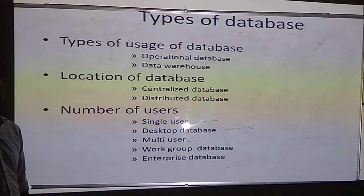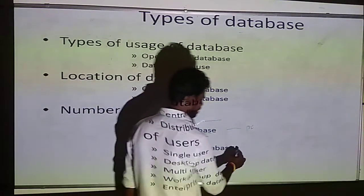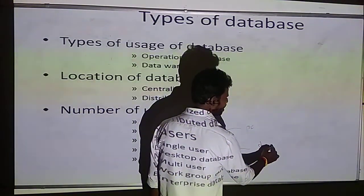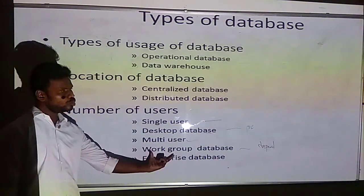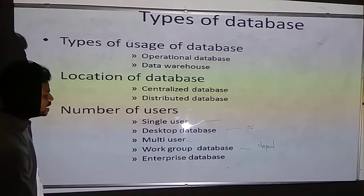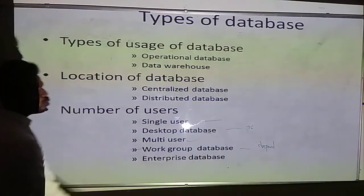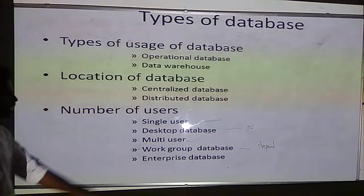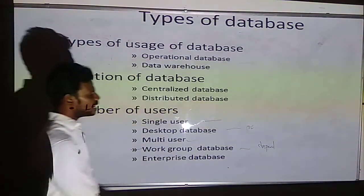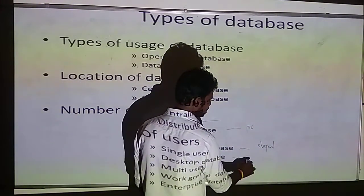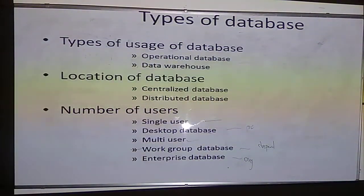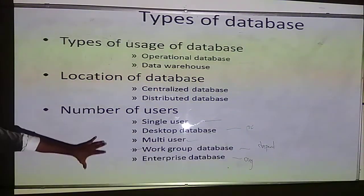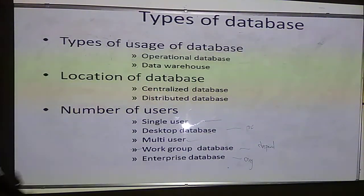In a workgroup database, an organization will have different departments, each with its own requirements. As per their requirements, a group of people are allowed to access that particular database — this is called a workgroup database. When a complete organization or company can access the database, then that is called an enterprise database. This classification is based on the number of users accessing the database system.